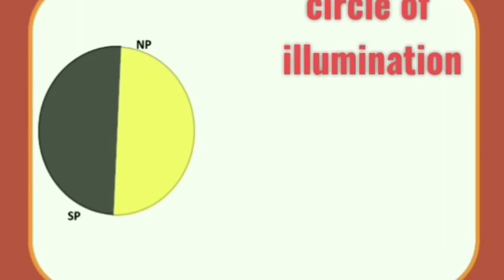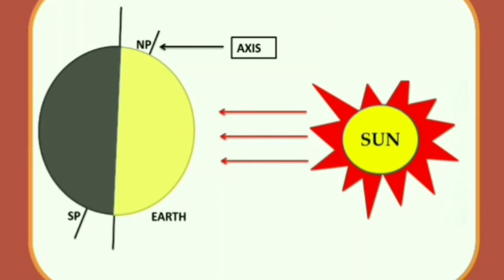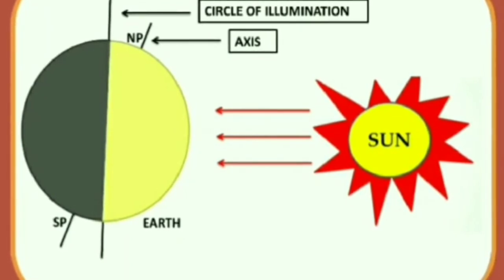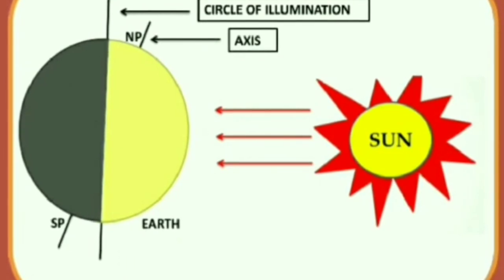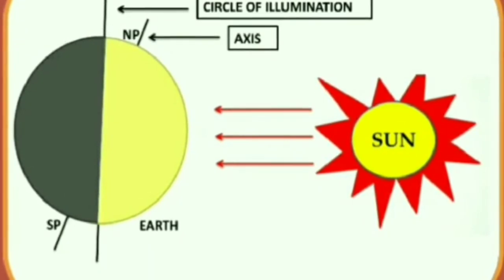Let us try to understand with the help of a diagram. For better understanding, on this screen, you can see earth and this is earth's axis which is tilted. Here is our sun and its rays are falling on the earth. Due to the spherical shape of the earth, only half of it gets light from the sun at a time. And the other half remains in darkness. Here, you can see a line or circle which separates the darkened part of the earth from the lighted one. This line is known as circle of illumination. In other words, you can say the circle that divides the day from night is called the circle of illumination. One thing to remember that this circle does not coincide with the axis as you can see in the diagram.